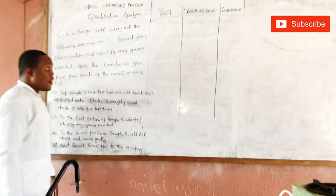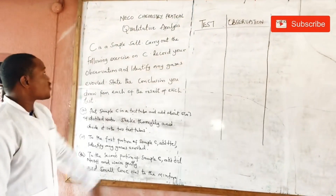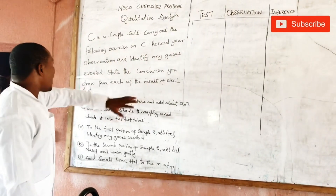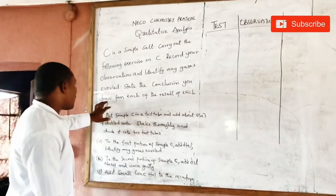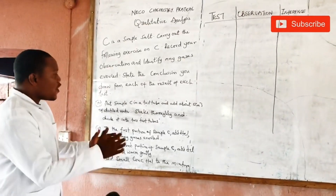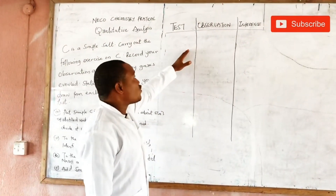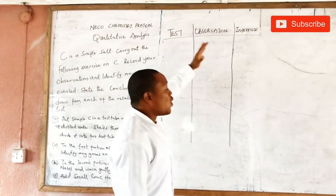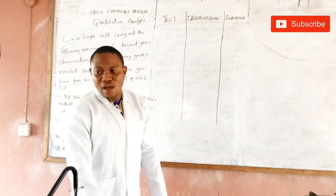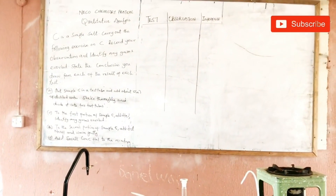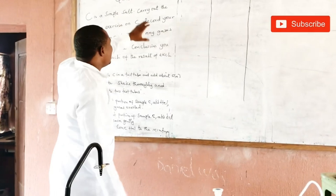Very quickly, let's go to your qualitative analysis. Let's see how the question might look. They said: 'C is a simple salt. Carry out the following exercises on C, record your observations, identify any gases evolved, and state the conclusion you draw from each test.' Before you start the experiment, you already have the table where you record: what is the test, what have you observed, and what can you infer from your observation.